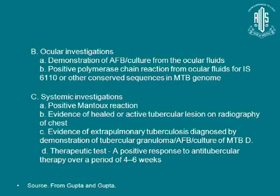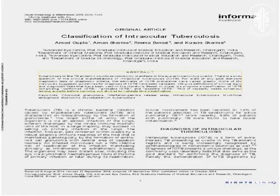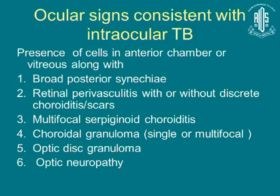In 2015, Dr. Gupta published another study that modified the ocular signs. The intermediate uveitis component was removed. They specified that there should be presence of cells in the anterior chamber or vitreous with broad posterior synechiae, with perivascularitis or choroiditis, with the remaining criteria staying the same.